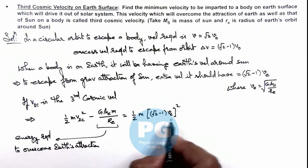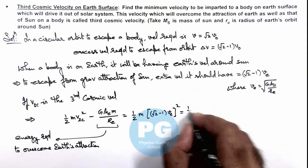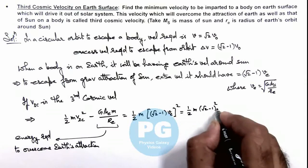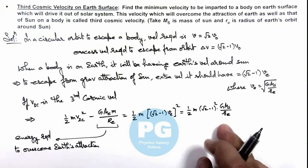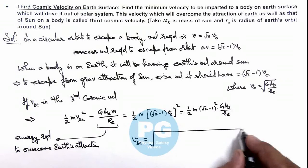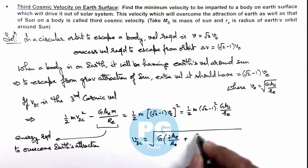So the remaining energy should be this, and if we substitute the value this will be half m multiplied by root 2 minus 1 whole square multiplied by G M_s over r_e. On simplifying this we get the value of v_3c is equal to - it is under the root of this will be G times 2 M_e over r_e plus root 2 minus 1 whole square M_s over small r_e.